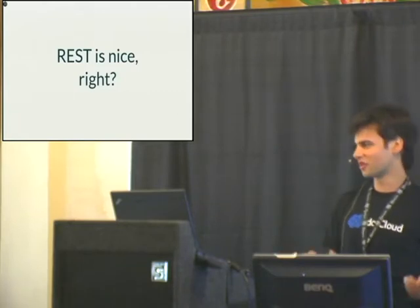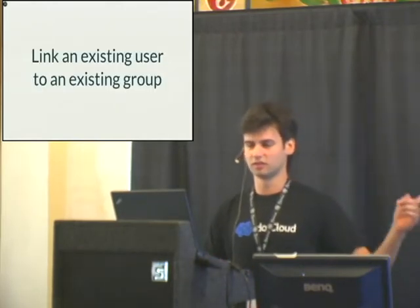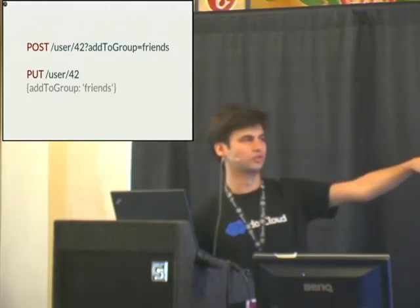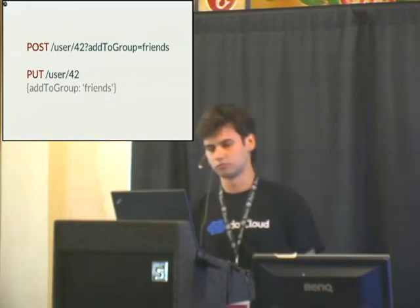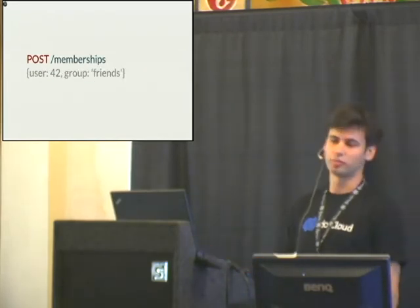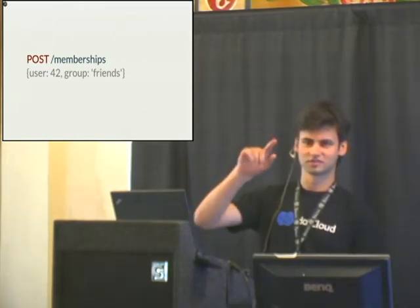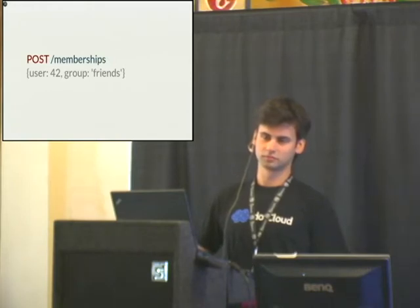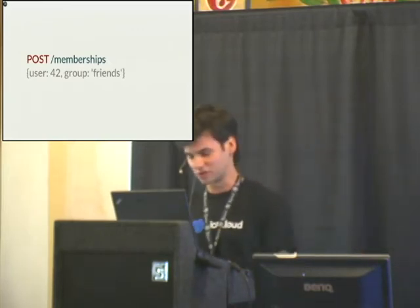We always use REST, right? REST APIs are what everyone tells us to do, at least for CRUD. REST is pretty good for CRUD. So let's take an example: let's link an existing user to an existing group RESTfully. What's the right way to do that? We could post with some sort of query string, or we could put — maybe we're updating the user with an add-to-group. Maybe we're editing the groups, adding users to the group. Maybe we have this whole other entity called memberships and we're creating a new membership. I'd probably personally go with the membership approach if I was RESTifying this API.